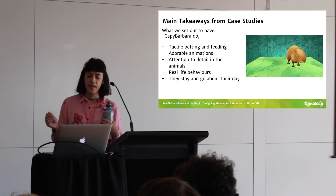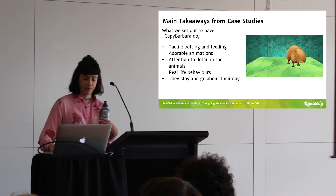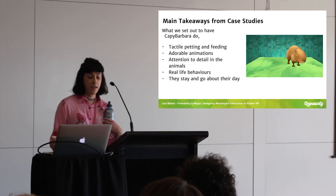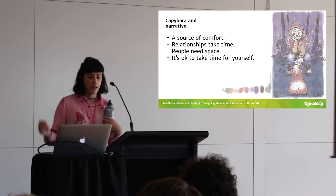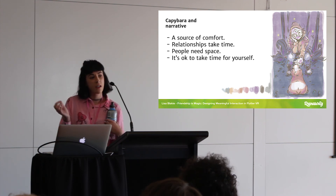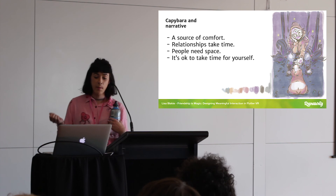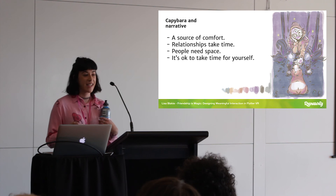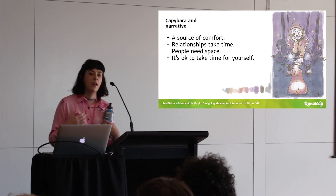We wanted this progression to be slower so she didn't completely steal the show - the game's about butterflies, it's called Flutter VR, not Barbara VR. All of these are directly related to tend and befriend, to respect nature and highlight the real-world behaviors of the creature. We also wanted to put this into the narrative - she acts as a source of comfort and as a metaphor about relationships taking time. People need space, and it's okay to take time for yourself, which is kind of reflected in playing a VR game itself.